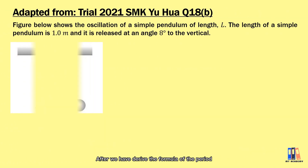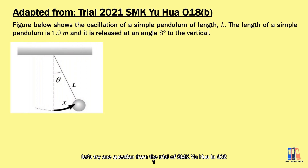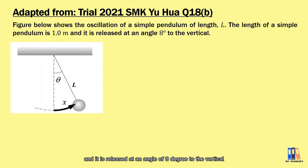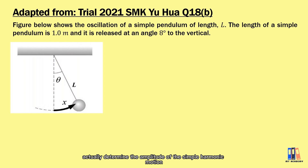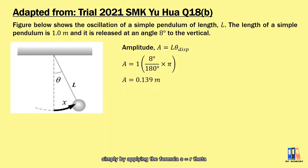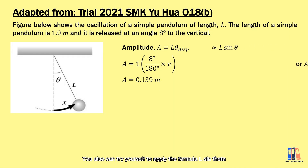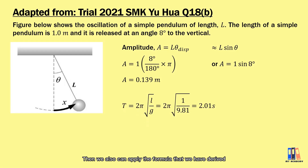Now let's try a question from the SMK UHA 2021 trial exam. The figure shows a simple pendulum with a string length of 1 meter, released at an angle of 8 degrees to the vertical. The initial angle determines the amplitude of the simple harmonic motion. Applying s = rθ, we multiply the string length of 1 meter by the angle in radians to obtain an amplitude of 0.139 m. Applying the period formula gives T = 2.01 seconds.